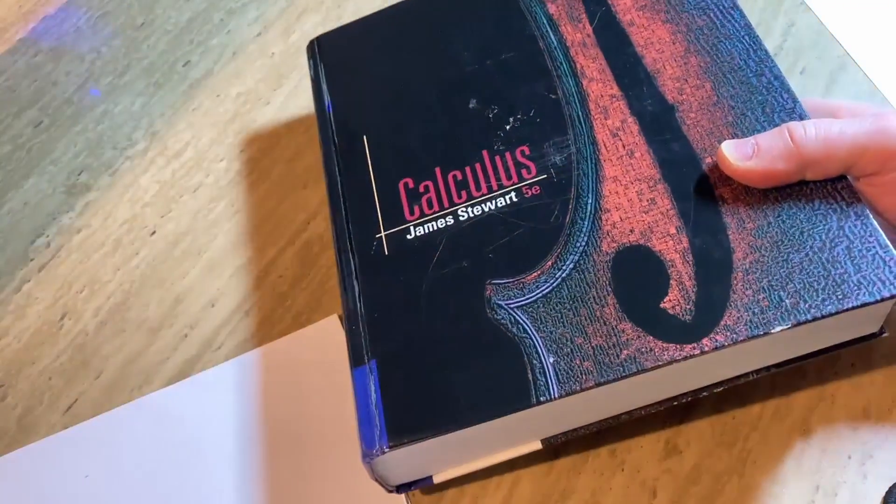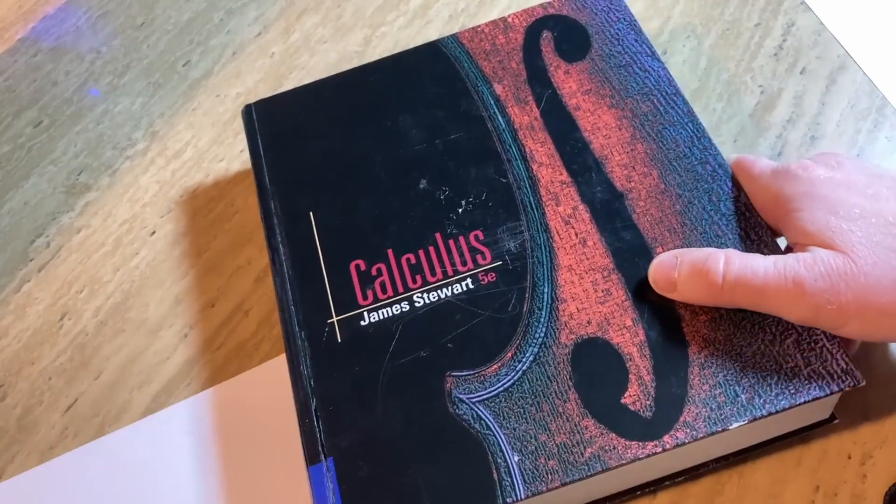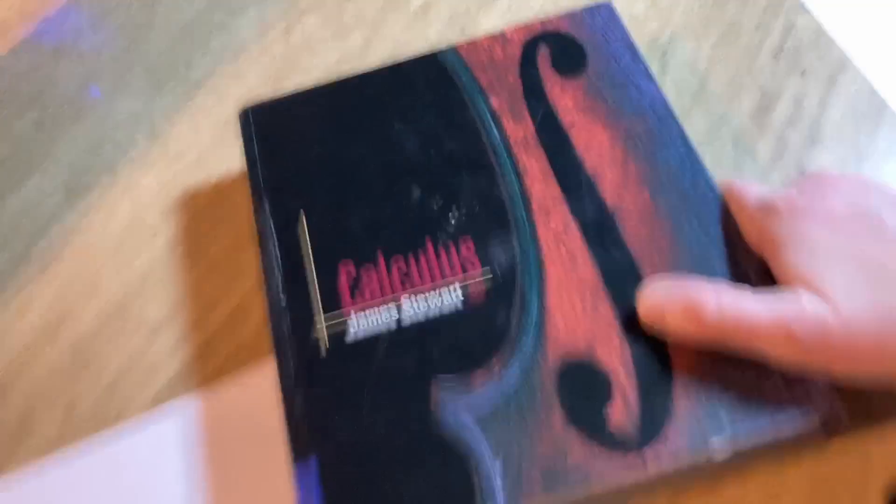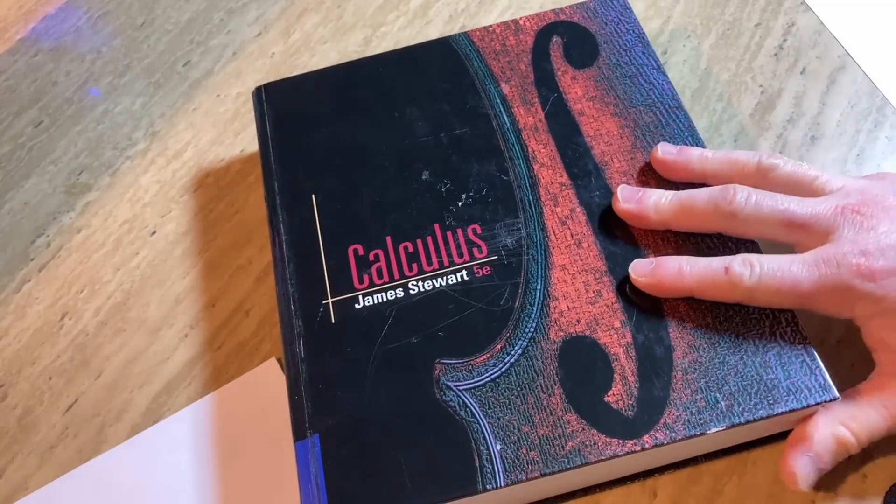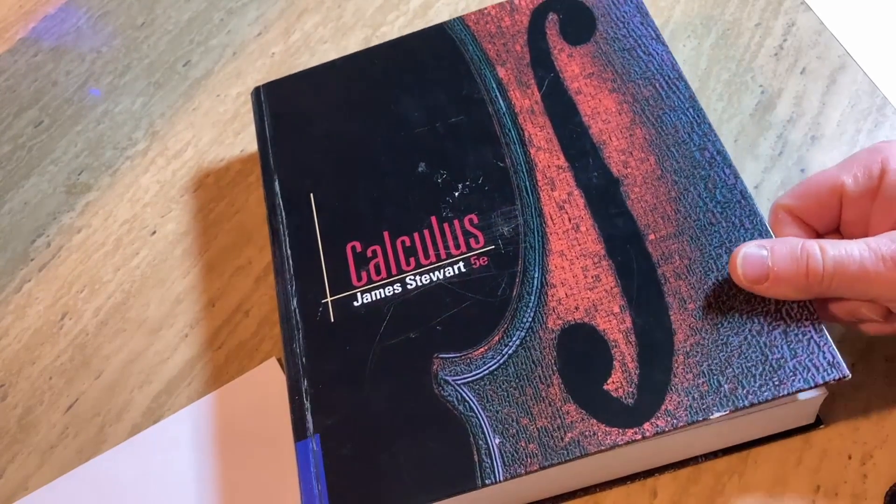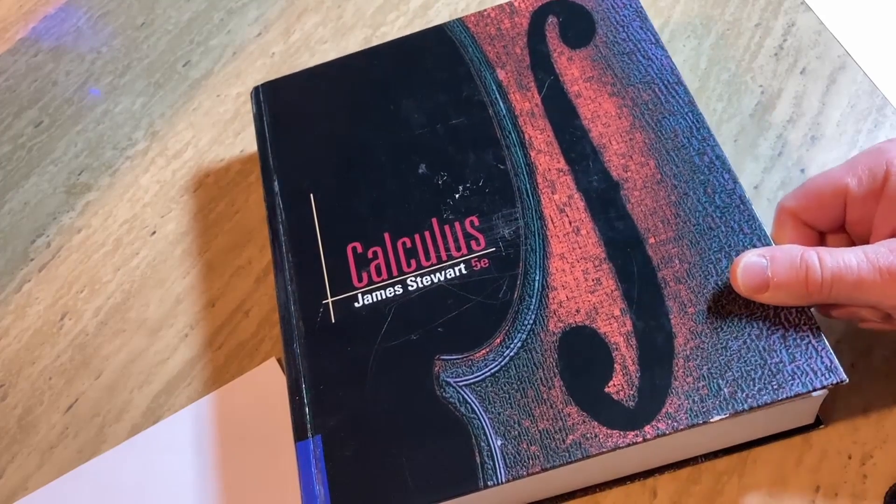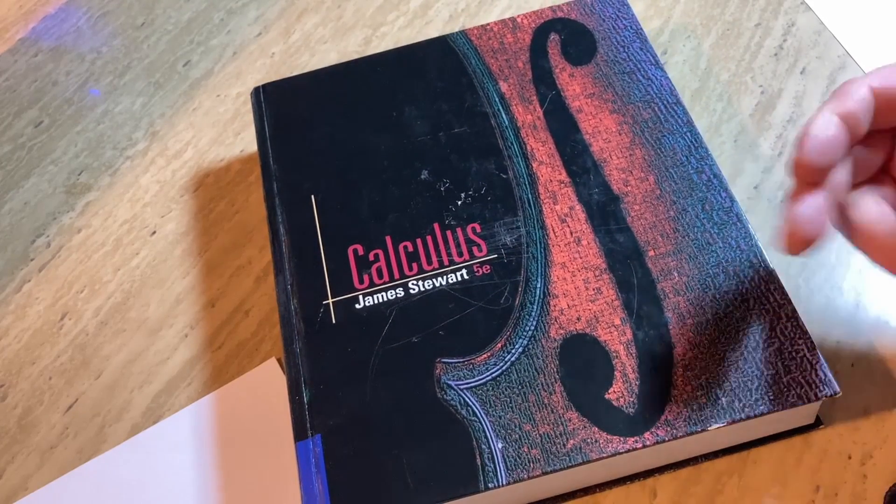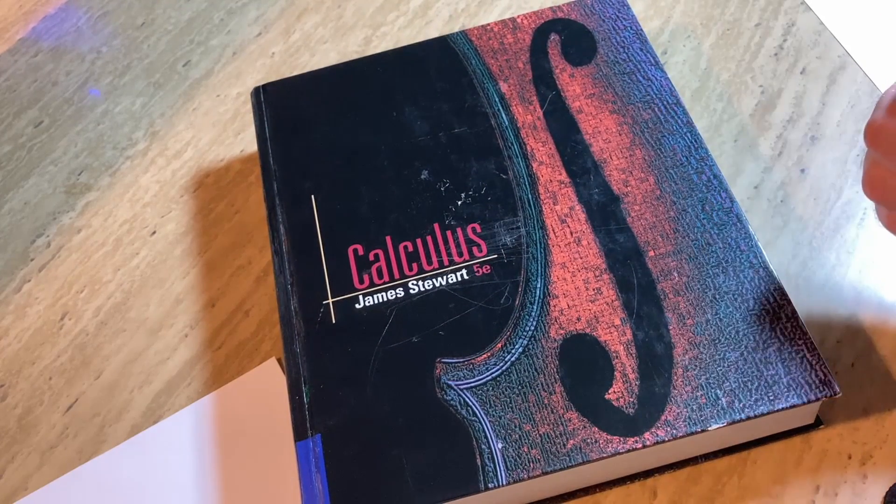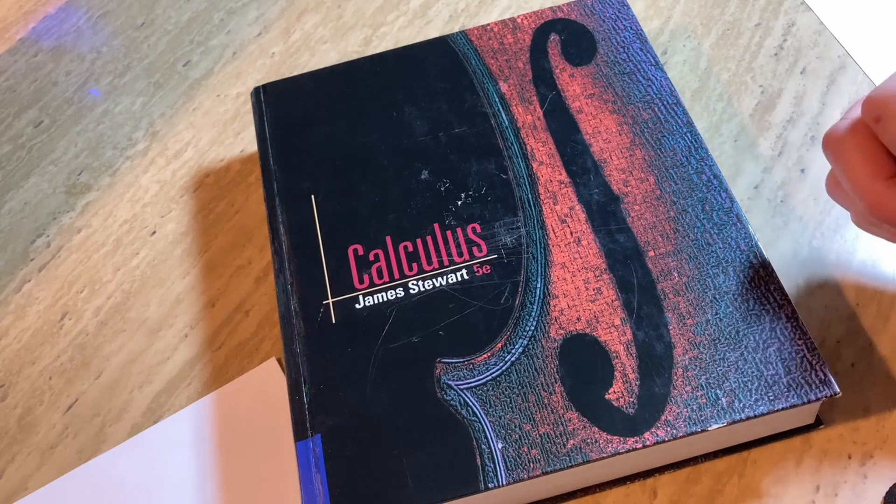And then here we have the last one I wanted to show you. So this one is called Calculus. It's by James Stewart. I've talked about this book before. So this book is used to teach or to take Calc 1, Calc 2, and Calc 3 in the United States. So three courses with this book, two courses with the previous book, and then one course with the college algebra book. That's six courses.